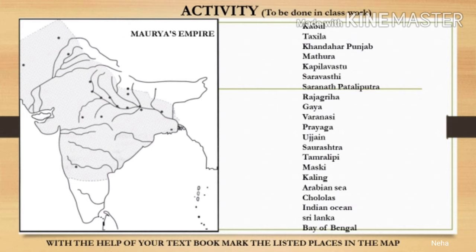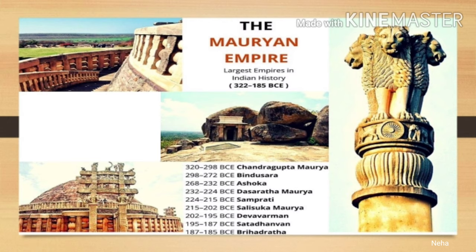Activity time, students! Now take a pause from the video for 5 to 10 minutes. Draw an India map and mark the following places on it — you can refer to your textbook for further help. On the screen, you can see the chronology of the Mauryan Empire. Just take a moment, pause the video and go through the names of the kings who ruled the Mauryan Empire.